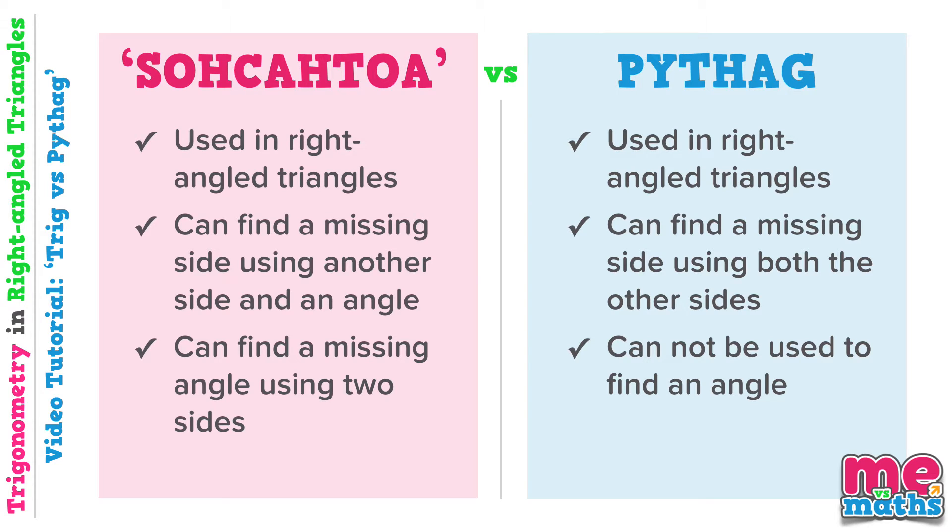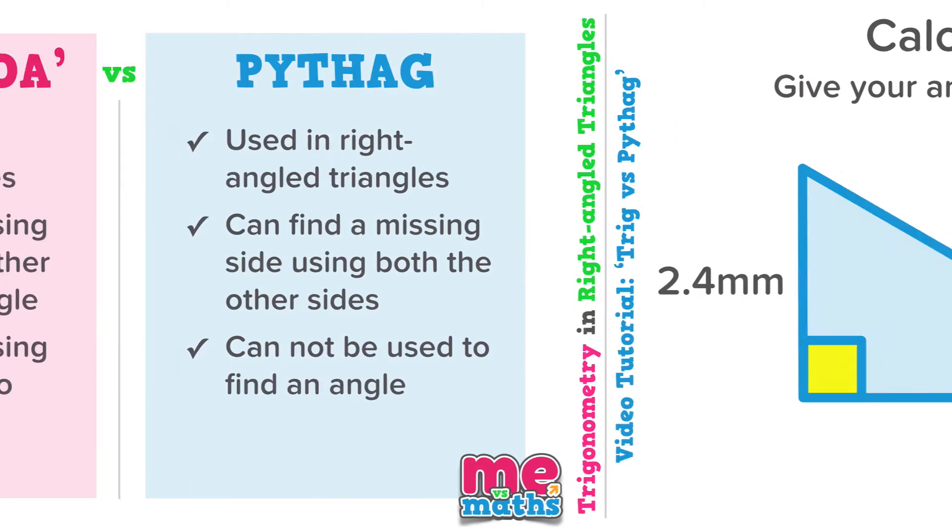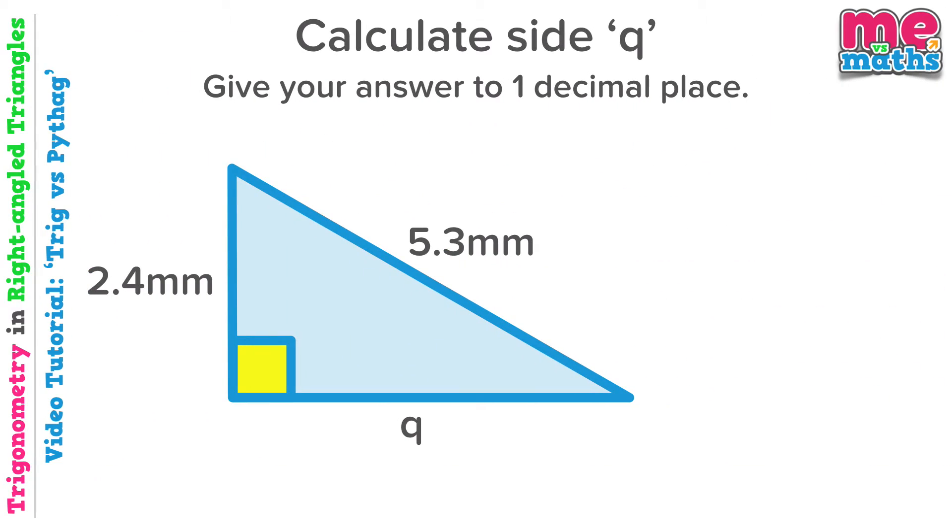Right, let's get applying this then, looking at some problems and working out which approach to use for each one. Our first question is asking us to find a side, so it could be trig or Pythagoras. But we are given both the other sides and no angles.